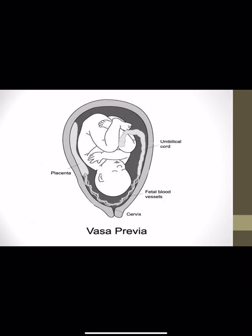Vasa previa is one of the placental causes of antepartum hemorrhage. Here, vessels pass in the membrane in front of the presenting part of the fetus. When artificial rupture of the membrane is performed, these vessels may be injured, causing severe bleeding. This type of antepartum hemorrhage is associated with a high rate of fetal death and is difficult to diagnose.